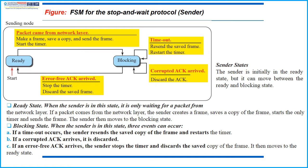The first state is the ready state. When the sender is in this state it is only waiting for a packet from the network layer. If a packet comes from the network layer, the sender creates a frame, saves a copy of the frame, starts the timer, and sends the frame. The sender then moves to the blocking state.